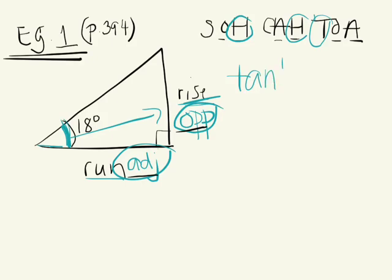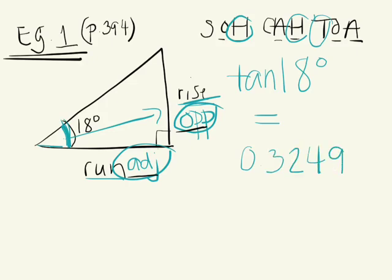I know that tan 18 degrees — that's the angle indicated — is equal to opposite over adjacent. All you need to do is plug this into your calculator and you'll get the ratio. Tangent of 18 degrees gives a ratio of approximately 0.3249, rounded to four decimal places. This is the ratio of the opposite over the adjacent side length.